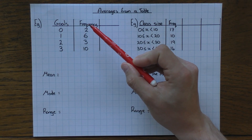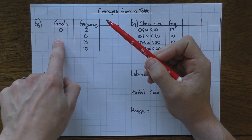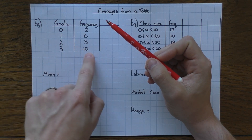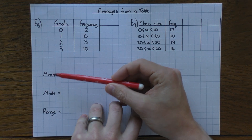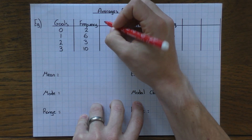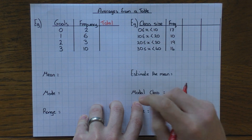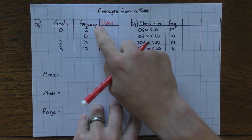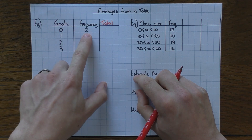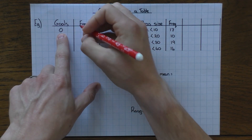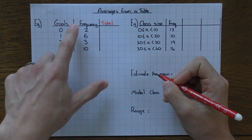Frequency just means how many, so this means I have two zeros, six ones, three twos, and ten threes. If you want to work out the mean, it's just like working from a list of numbers — you need to work out the total. This is why I've got this extra column. Sometimes they give it to you in the exam, sometimes they don't; if they don't, just add a little column.